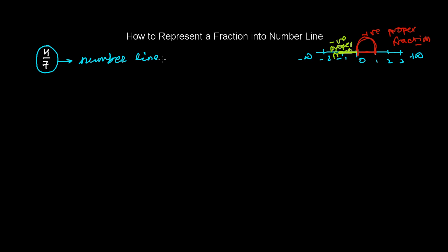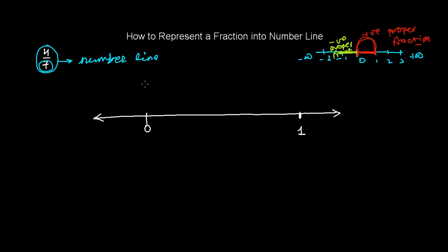If the proper fraction is negative, it will fall between 0 and minus 1. Since 4 over 7 is a positive proper fraction, it will be somewhere in that region. The first step is to draw a number line. Since it's positive, mark 0 here and take a unit distance to mark 1. Now look at the denominator — the bigger number in a proper fraction is always the denominator, which is 7, so you need to make 7 equal sections between 0 and 1.